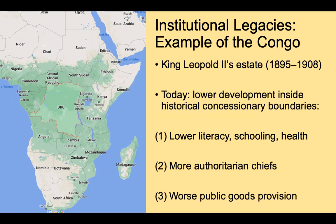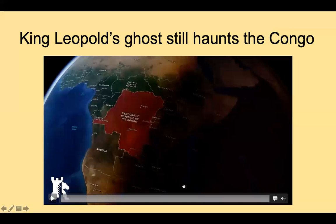This is a good example of using a natural experiment to tease out the impact of a particular set of institutions imposed during colonial rule. You might ask how certain we can be that King Leopold II's reign brought about these present-day outcomes, since it's difficult to know how the Congo would have developed in the absence of those institutions. But there is a clear difference in literacy, schooling, health outcomes, and public goods provision inside versus outside the concessionary boundaries. The Congo is one of the more extreme examples — let's continue the video.